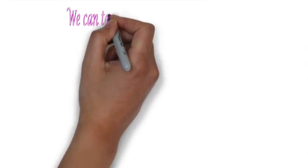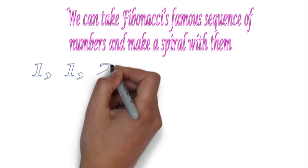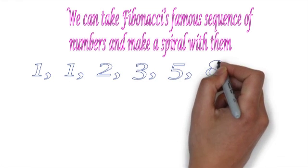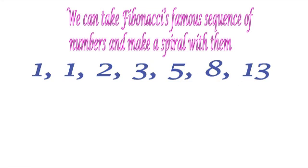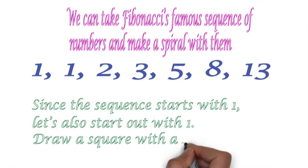Let's have a look at Fibonacci in nature. We can take Fibonacci's famous sequence of numbers and make a spiral with them. So 1, 1, 2, 3, 5, 8, 13. Since the sequence starts with 1, let's also start out with 1. So draw a square with a side length of 1.